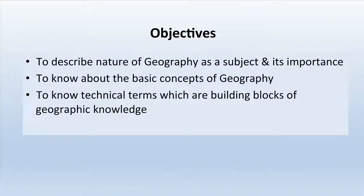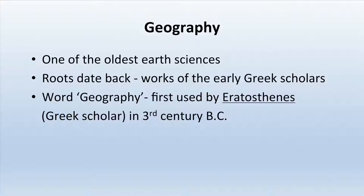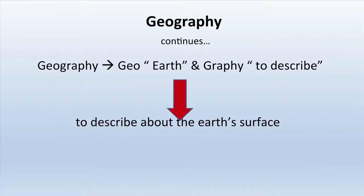Geography is one of the oldest earth sciences and its roots date back to the works of early Greek geographers. The word geography was first used by Eratosthenes, who was a Greek scholar in the third century BC. Geography is composed of two words: 'geo' meaning earth and 'graphi' meaning to describe, so geography means to describe the earth's surface.